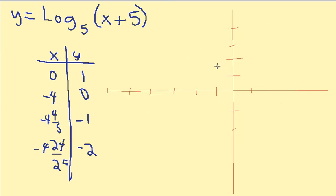Okay, let's plot these points and sketch our graph. x is zero, y is one. We'll go about right here. x is negative four, y is zero. One, two, three, four. About right here.